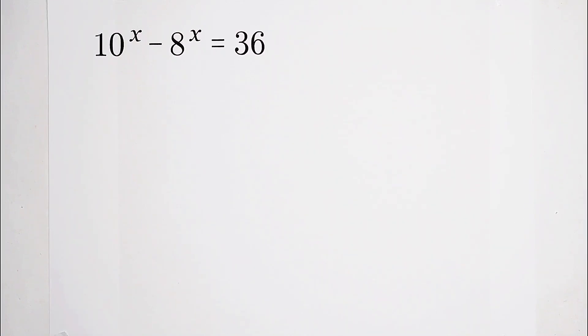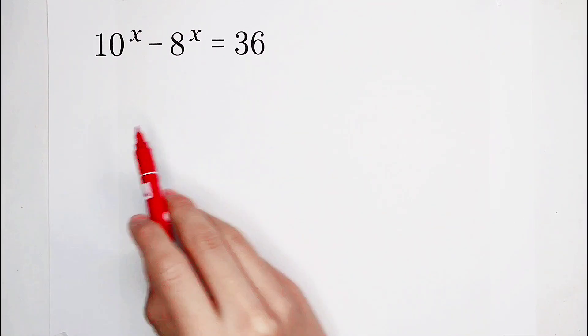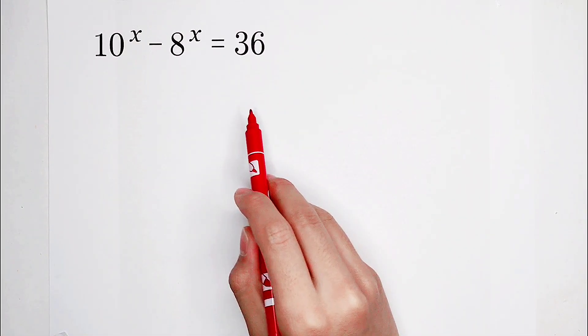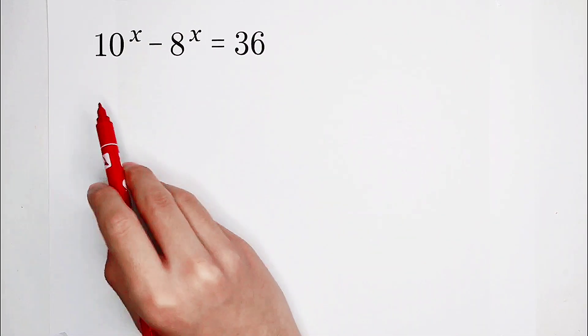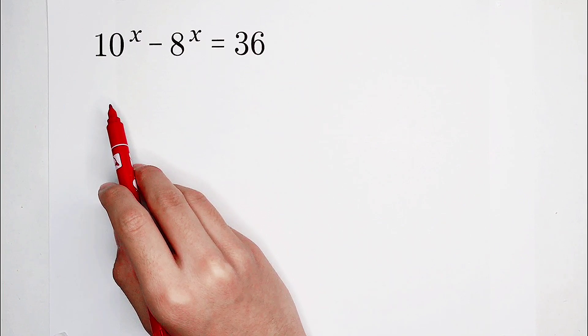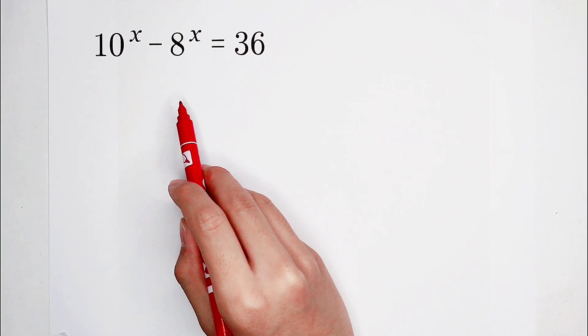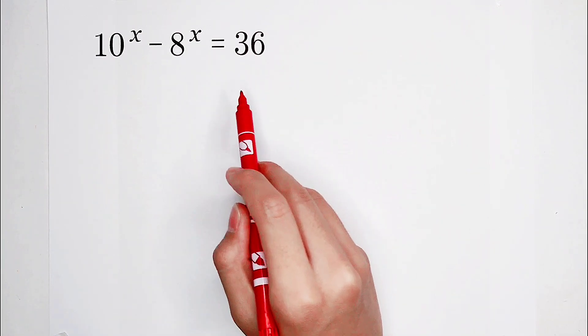Welcome back to Mathwino. Solve this equation for x: 10 to the power of x minus 8 to the power of x is equal to 36.